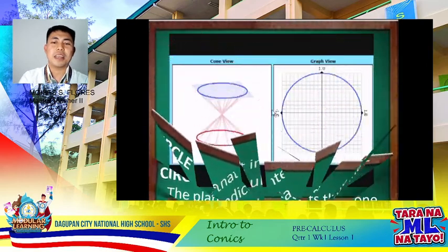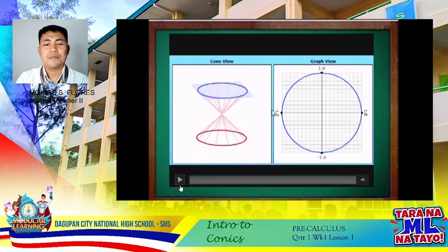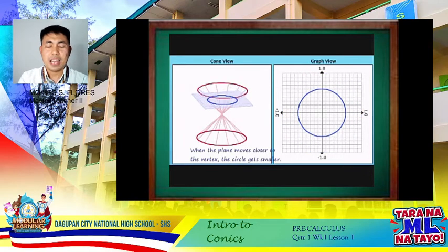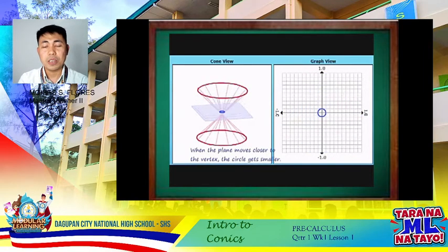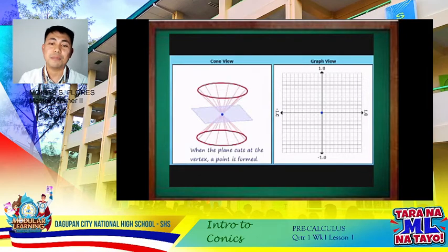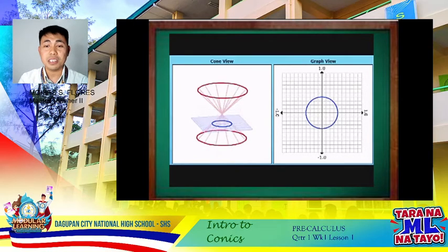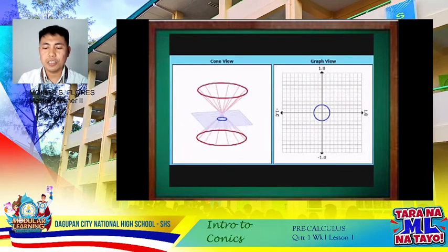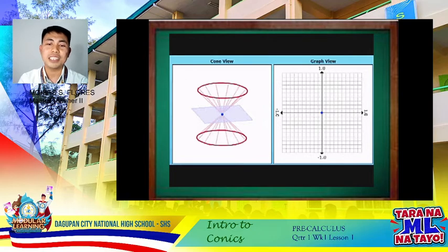Let's watch this clip. As the plane moves horizontally with the cone, the graph becomes either smaller or bigger. Notice also that when the plane reaches the apex of the cone, it forms a point — that is now called the degenerate case of a circle. So the degenerate case of a circle is simply a point.